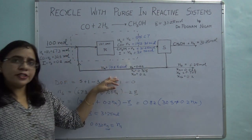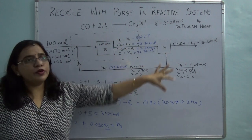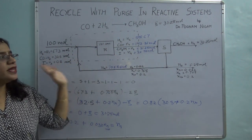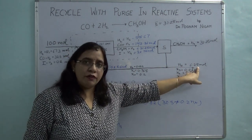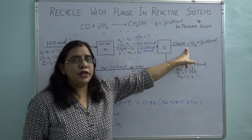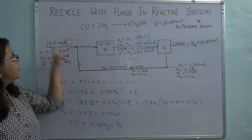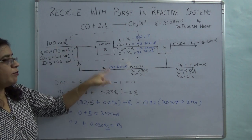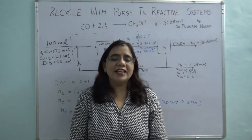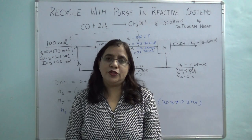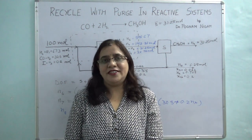The balanced flowsheet is now complete with molar flow rates and compositions of all streams. The problem asked for the molar flow rate of the purge stream (6.25 moles), the product stream (31.25 moles of methanol), and the recycle ratio. The recycle ratio = Nr / 100 = 705.86 / 100 ≈ 7.05. I hope you found this helpful — please like and subscribe. Thank you.